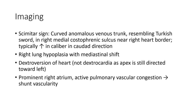On imaging, the Scimitar sign appears as a curved anomalous venous shadow resembling a Turkish sword (scimitar). In the right lower posterolateral region near the diaphragm, there is a tubular hyperlucent type column increasing in caliber in the lung caudal direction. Right lung hypoplasia is seen with mediastinal shift, dextrocardia, prominent right atrium, active pulmonary vascular congestion leading to shunt vascularity.